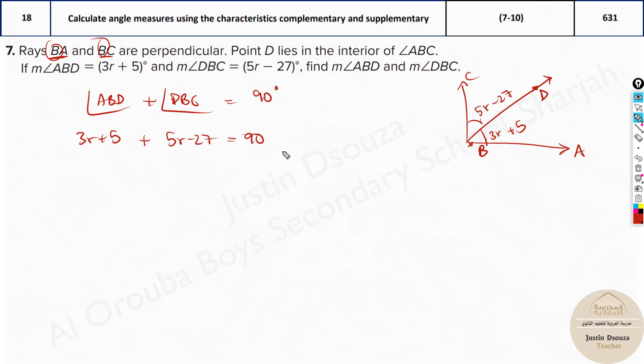Now what is ABD? They have given it to be 3r + 5 plus 5r - 27 equals 90. You can use your calculator and directly find it. I'll solve it over here. 3 plus 5 is 8r minus 27 plus 5 is negative 22 equals 90. Take 22 to the other side. It will be 8r equals 90 plus 22, that will be 112. Now divide this. r will be 14 here. So r is 14.